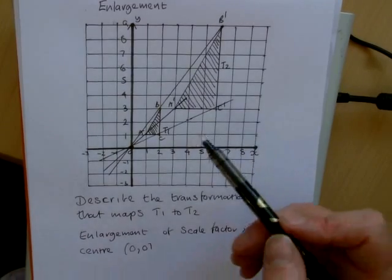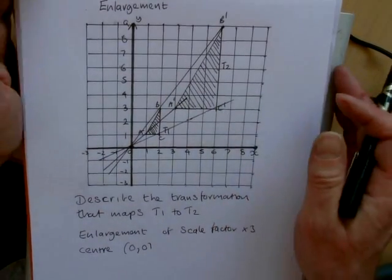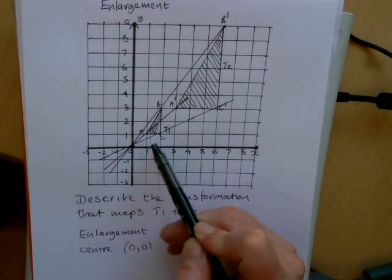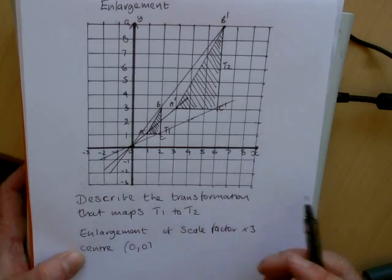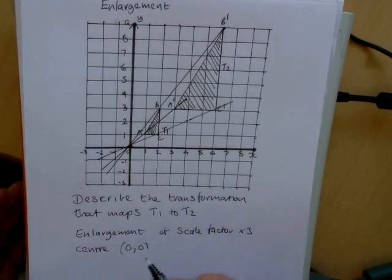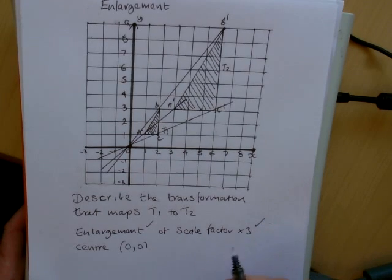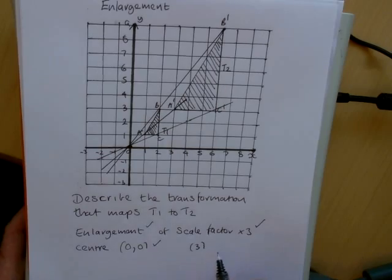In most exam questions and textbook questions, because there isn't a lot of room on a page, the centre will be somewhere nearby. But it's drawing those lines through that will help you find exactly where the centre is. So: one mark for enlargement, one mark for scale factor, and one mark for centre — three marks altogether.